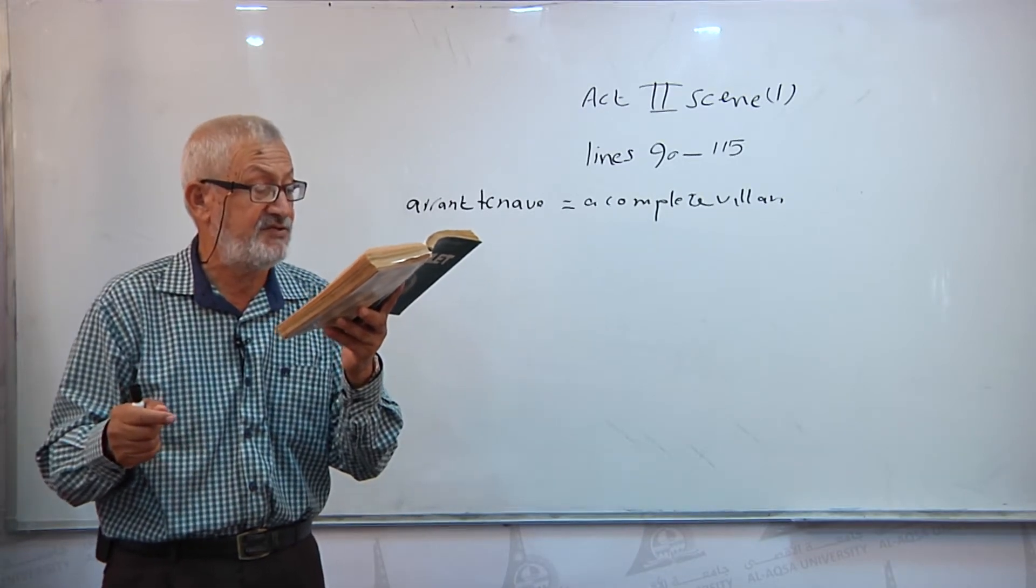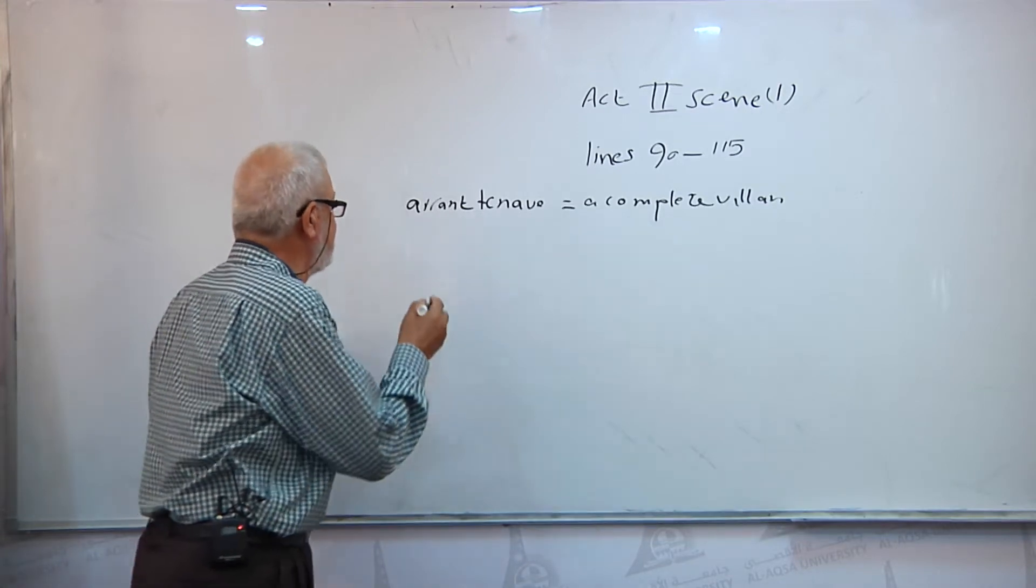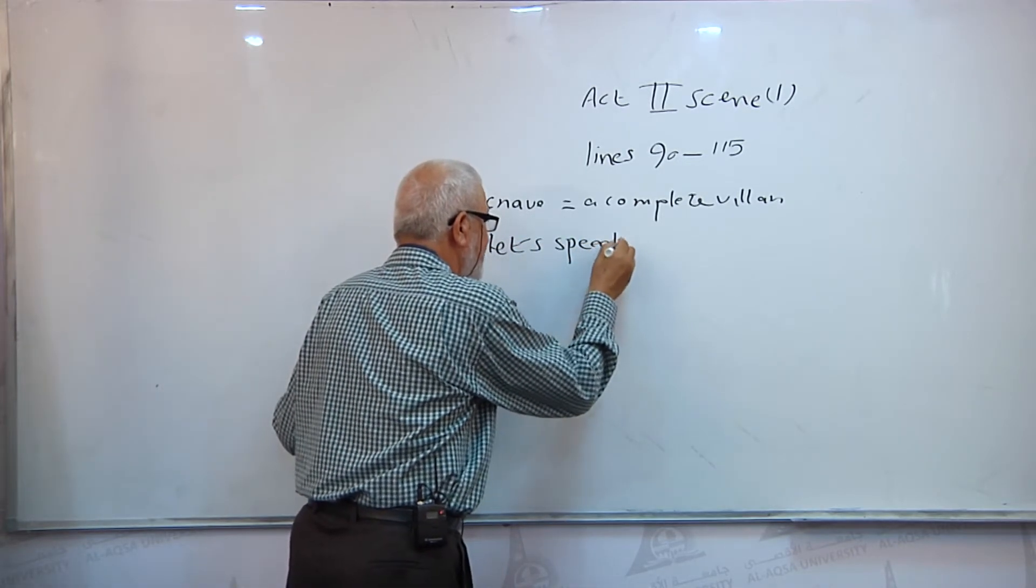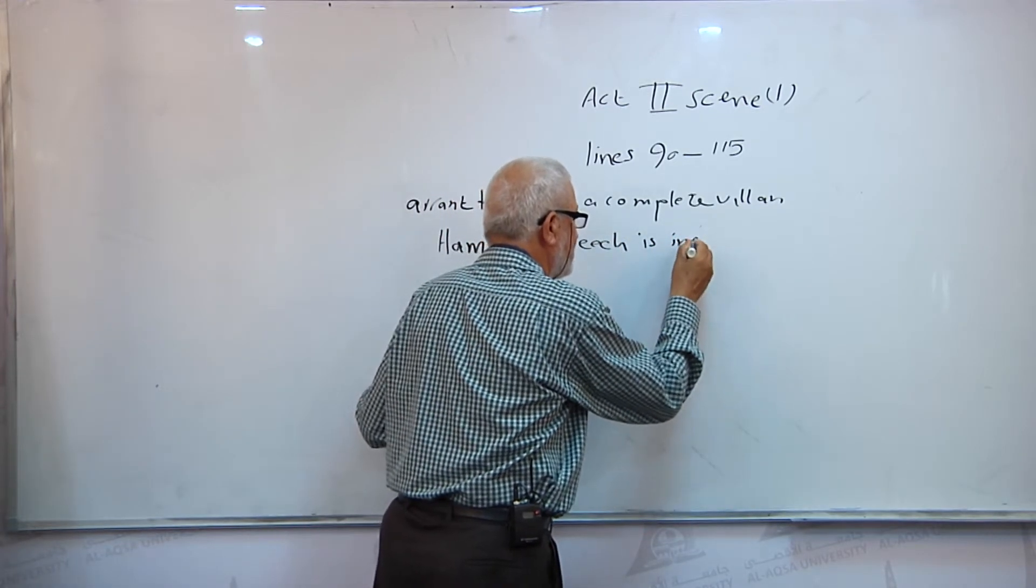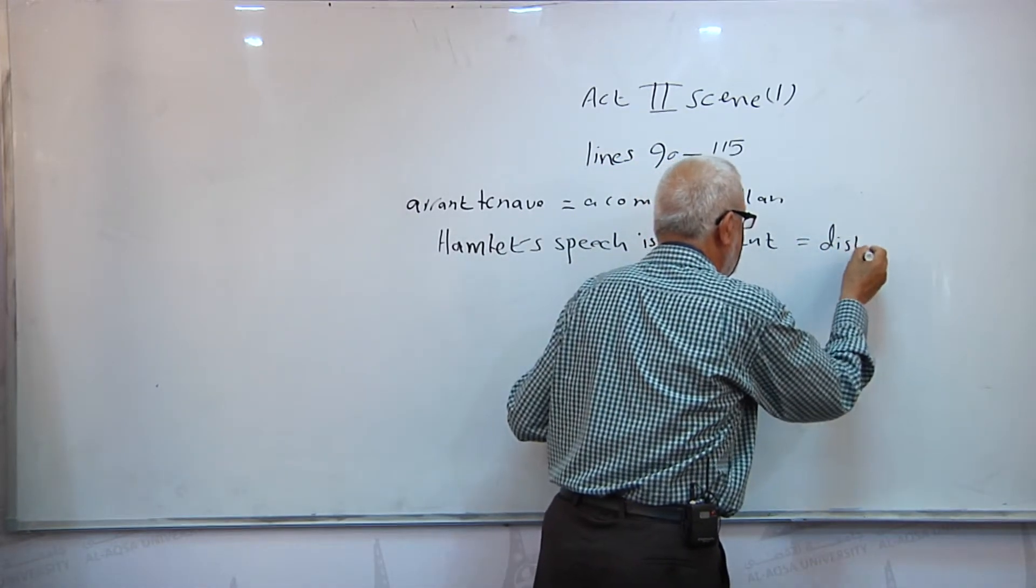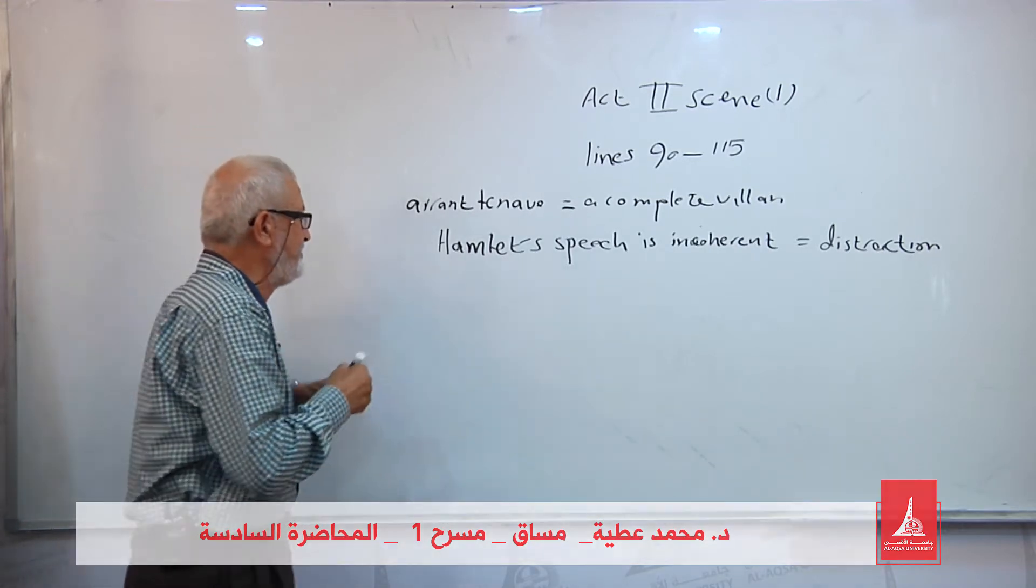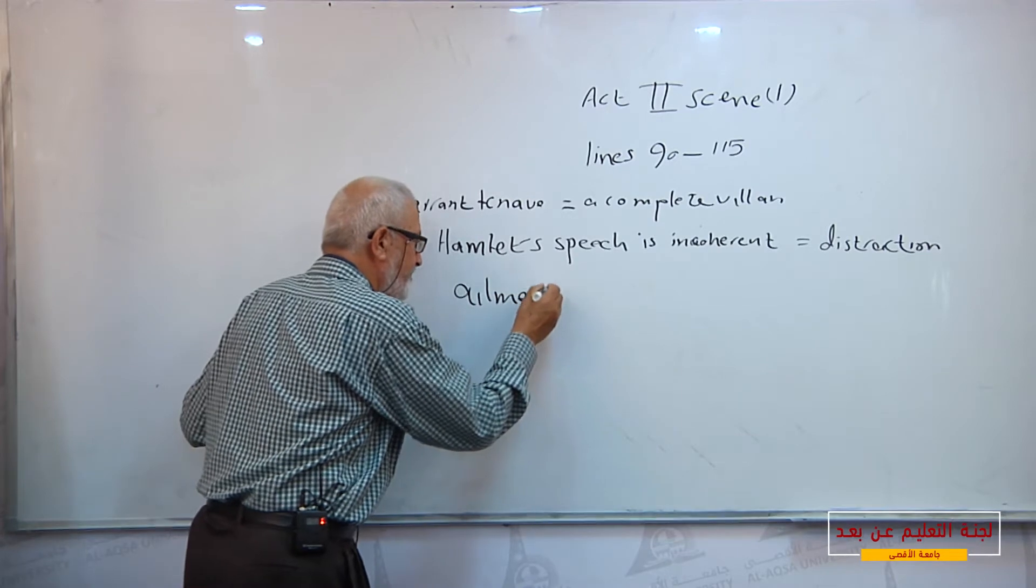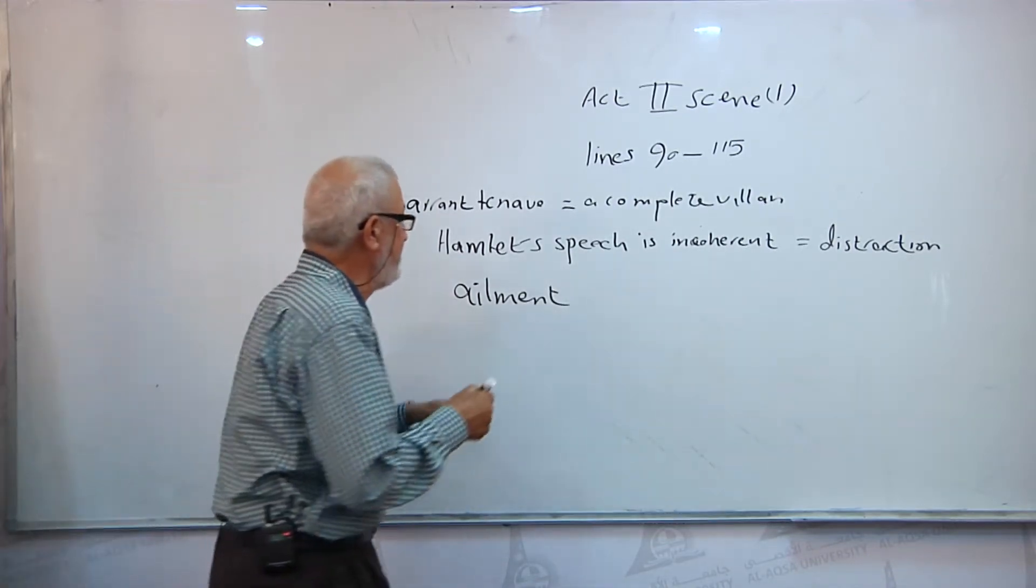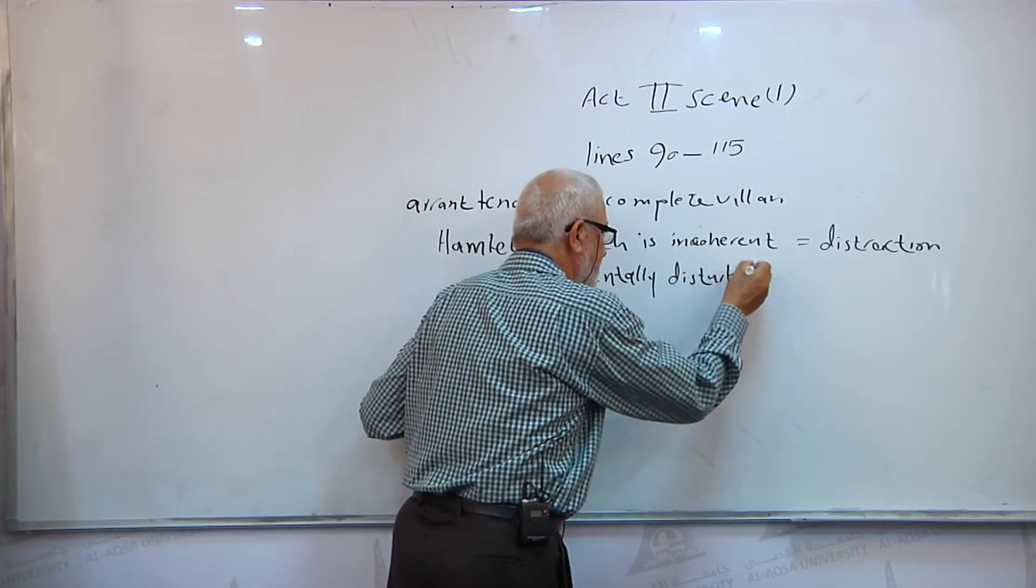Horatio says these are but wild and whirling words, my lord. Here Horatio alludes that Hamlet's speech is incoherent, which is a sign of distraction. Not destruction, distraction. This is the first sign that Hamlet has fallen in an ailment. He became sick, mentally sick, or let us say disturbed, mentally disturbed.